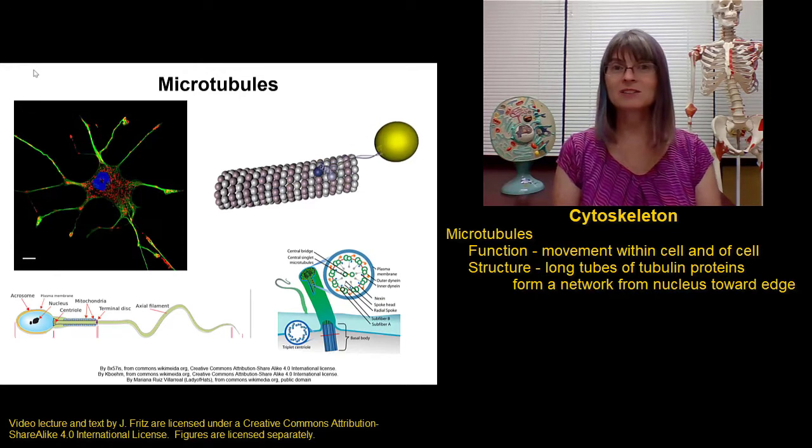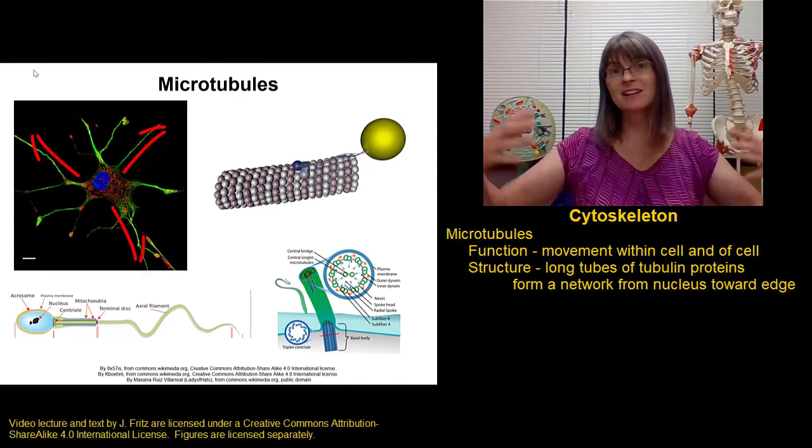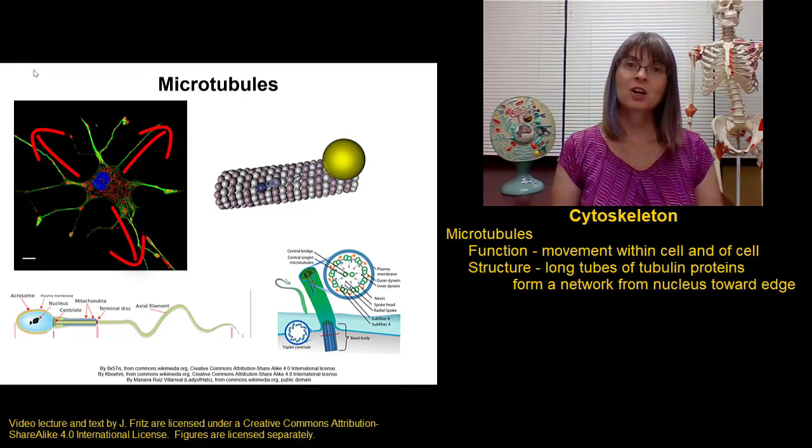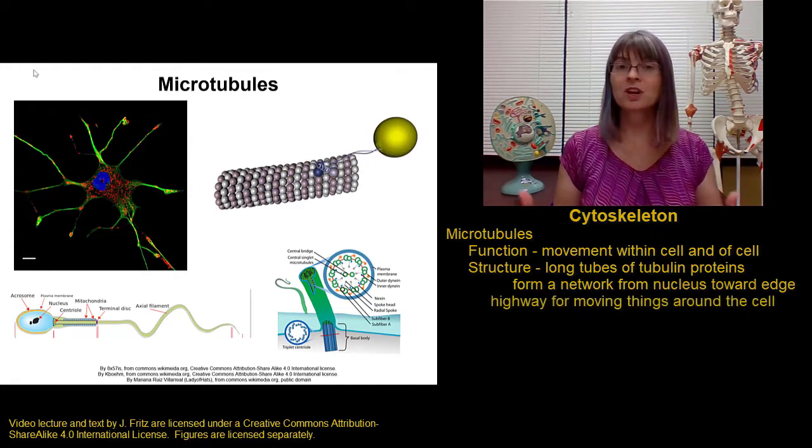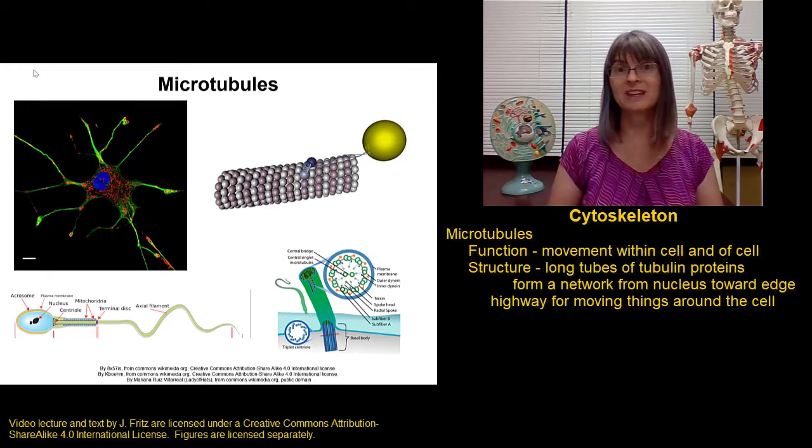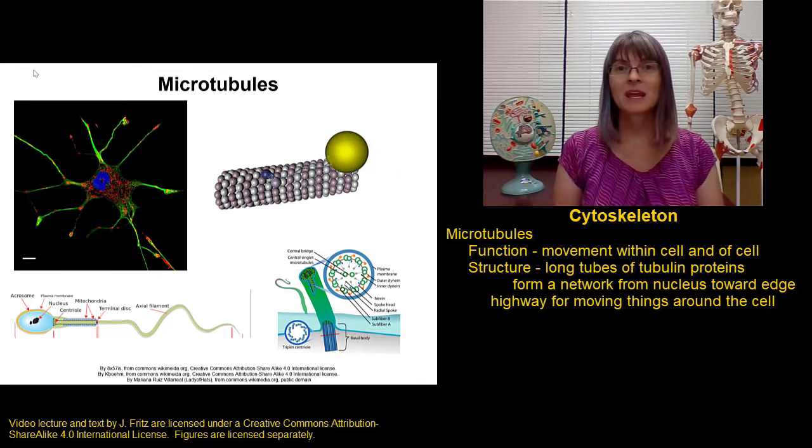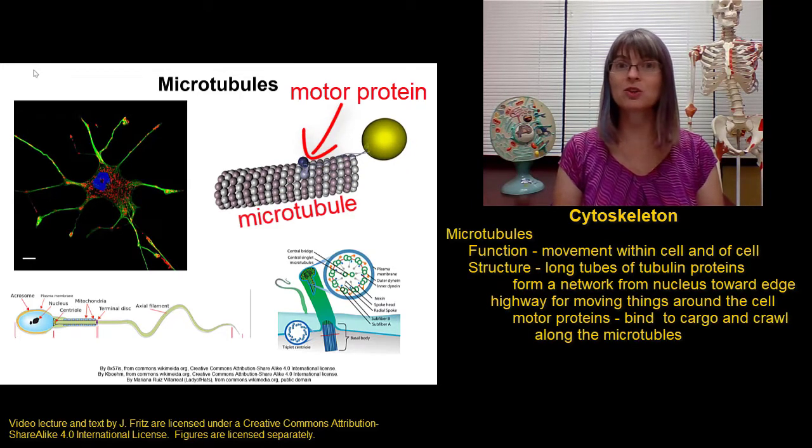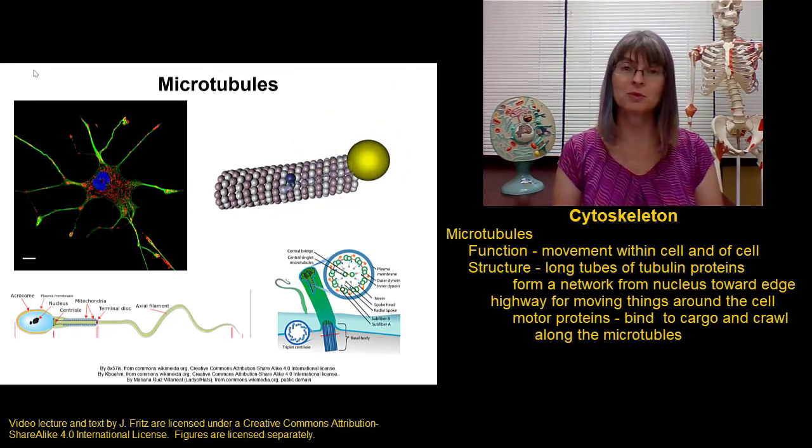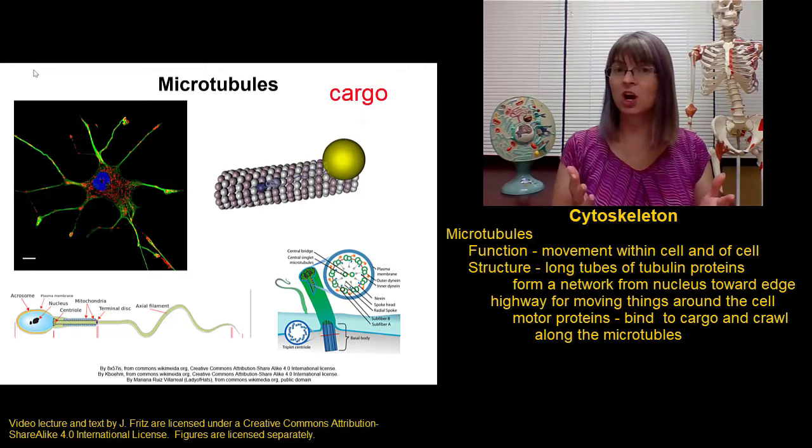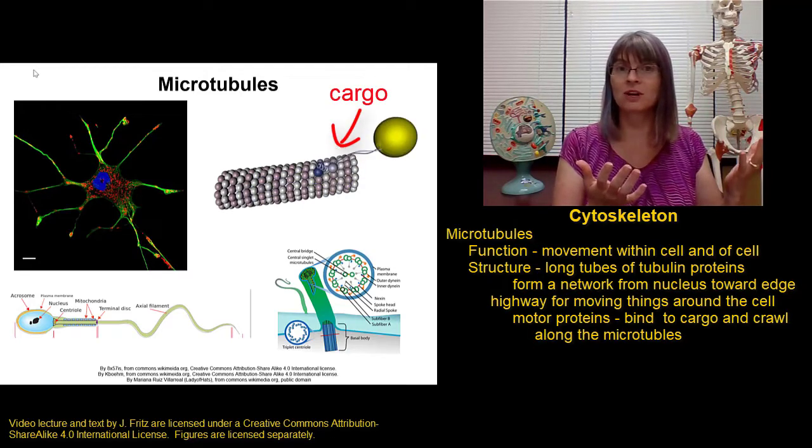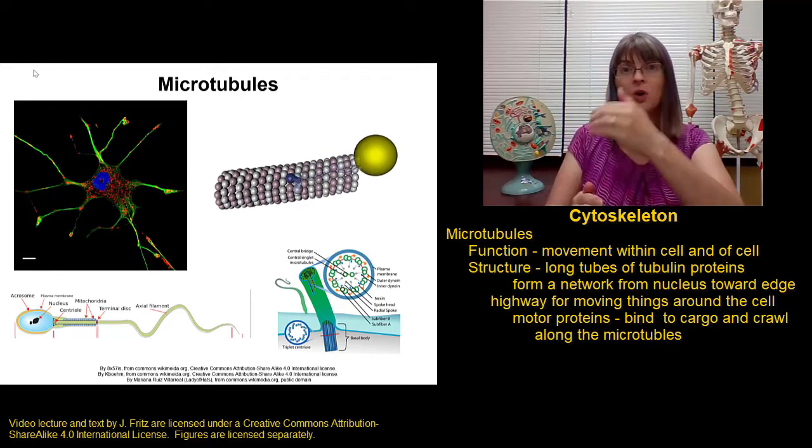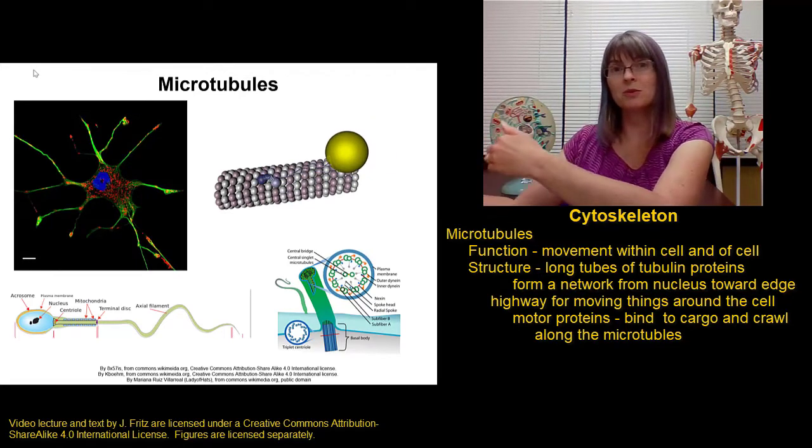Microtubules form a network that starts near the nucleus and then extends out towards the edges of the cell, and this network creates a highway of sorts for moving material around within the cell. There are special sorts of proteins called motor proteins that have the ability to crawl along microtubules. So you can hook any sort of cargo, a vesicle or another organelle, to a motor protein and the motor protein then crawls its way along the microtubules.